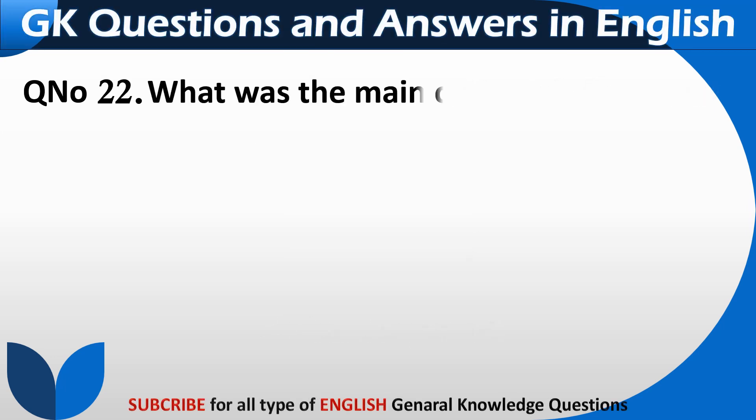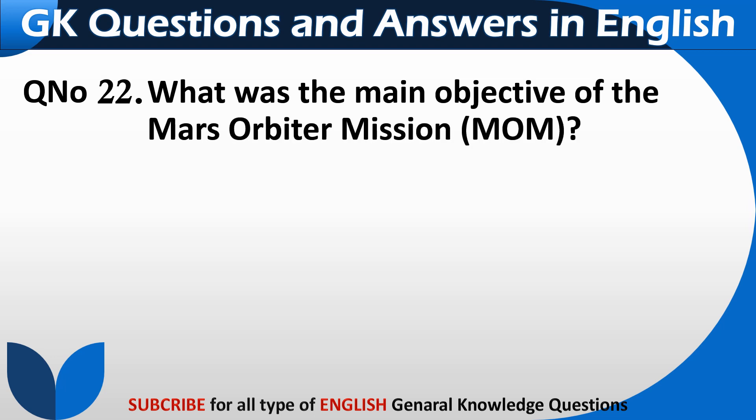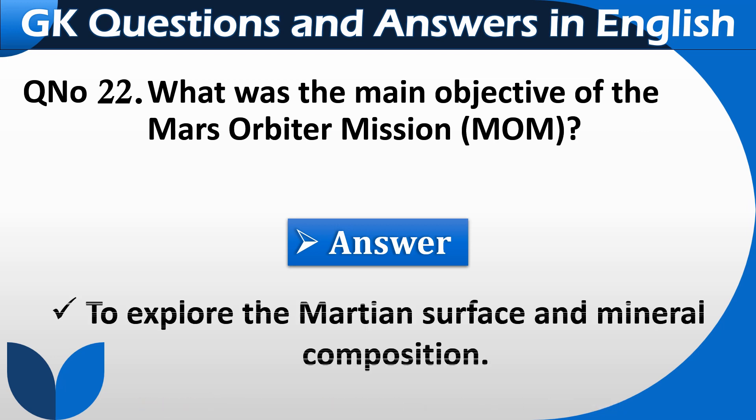What was the main objective of the Mars Orbiter Mission? To explore the Martian surface and mineral composition.